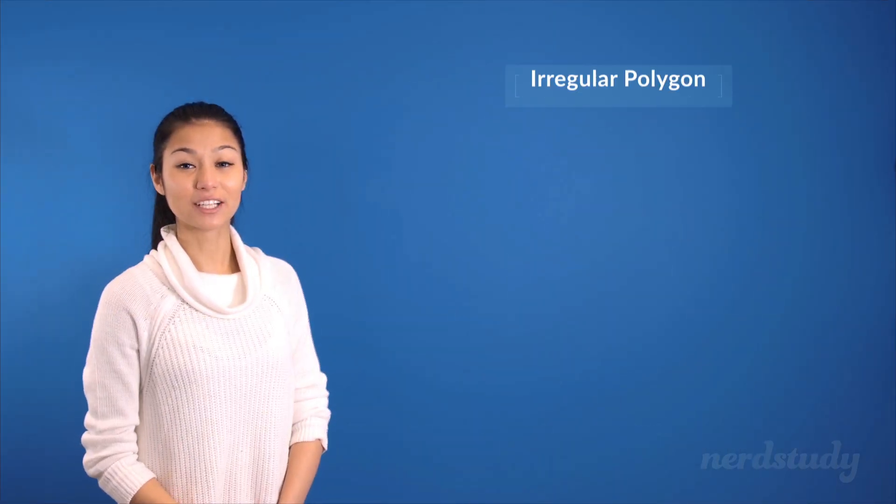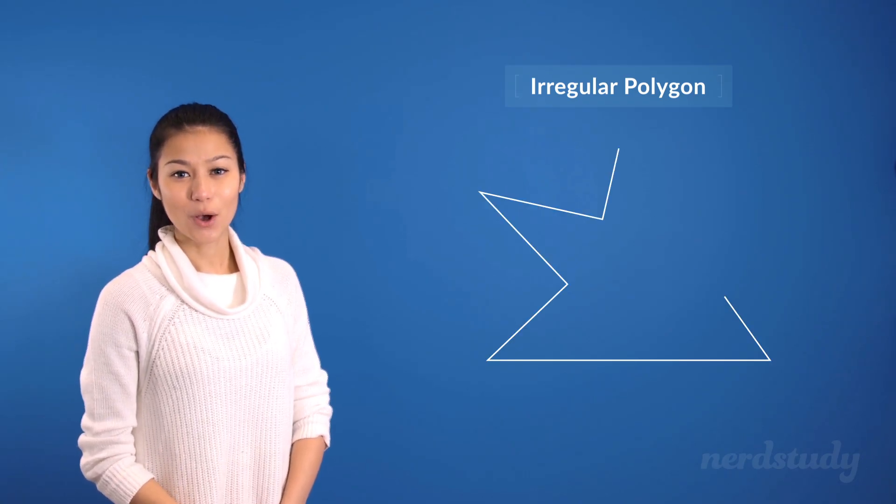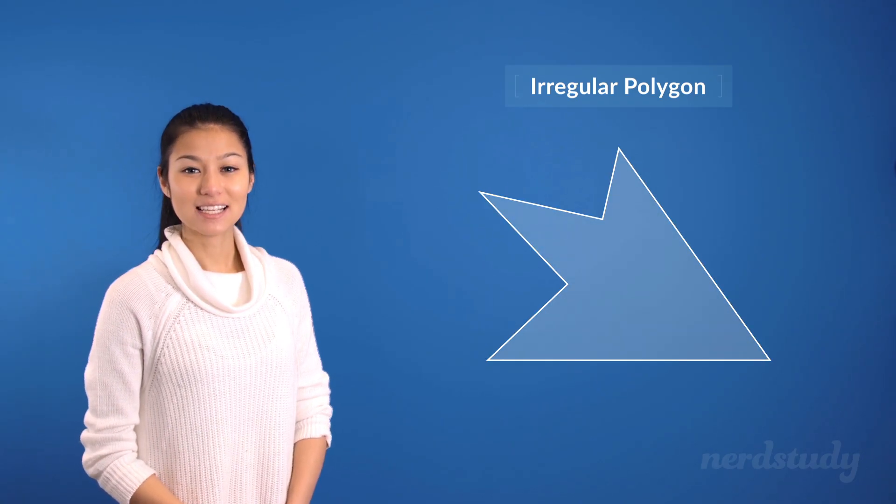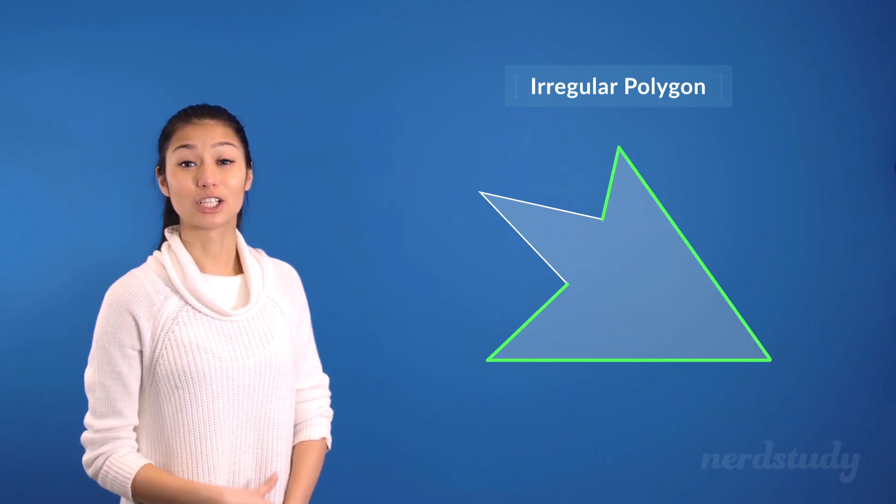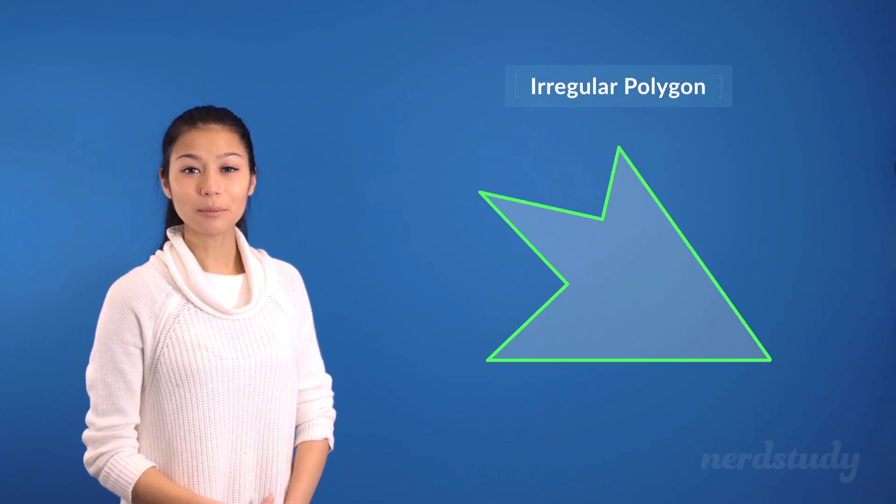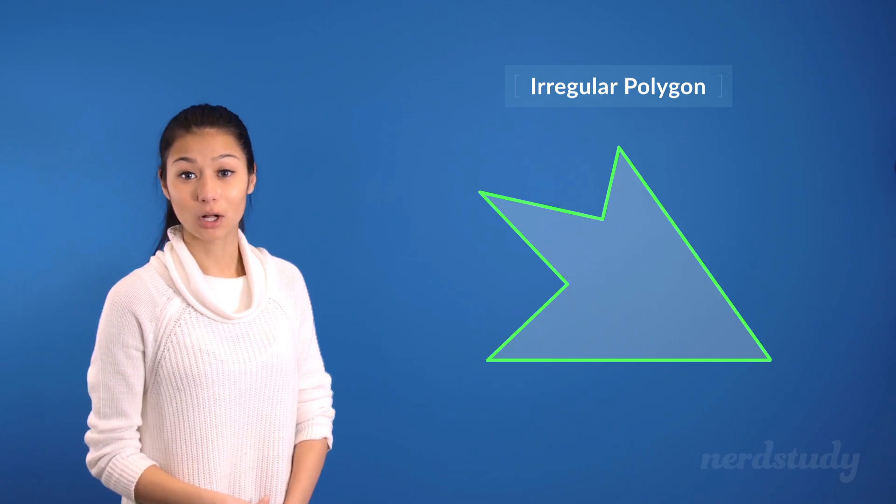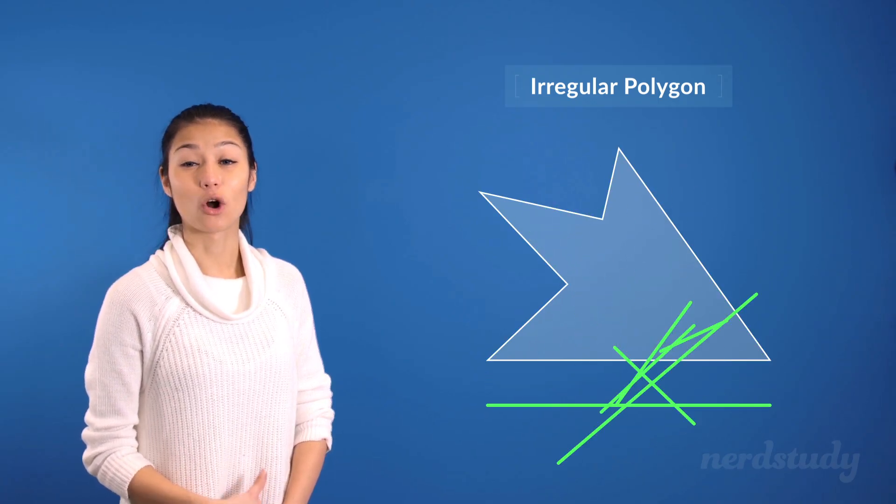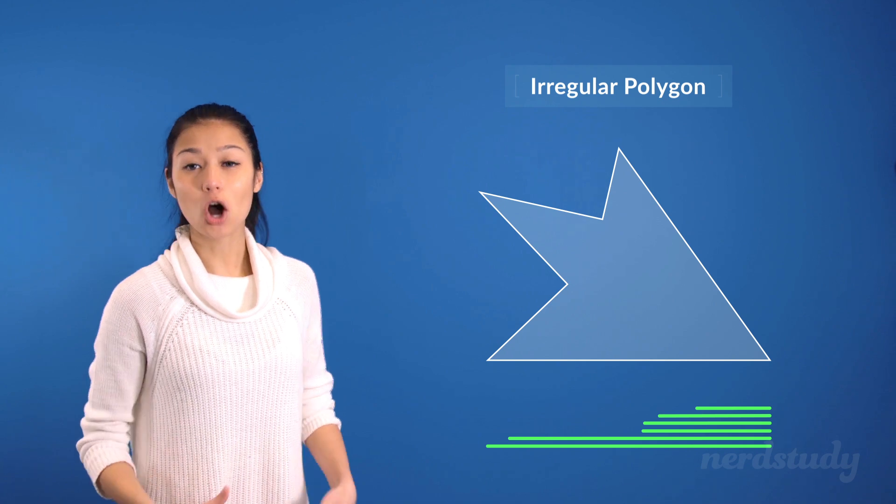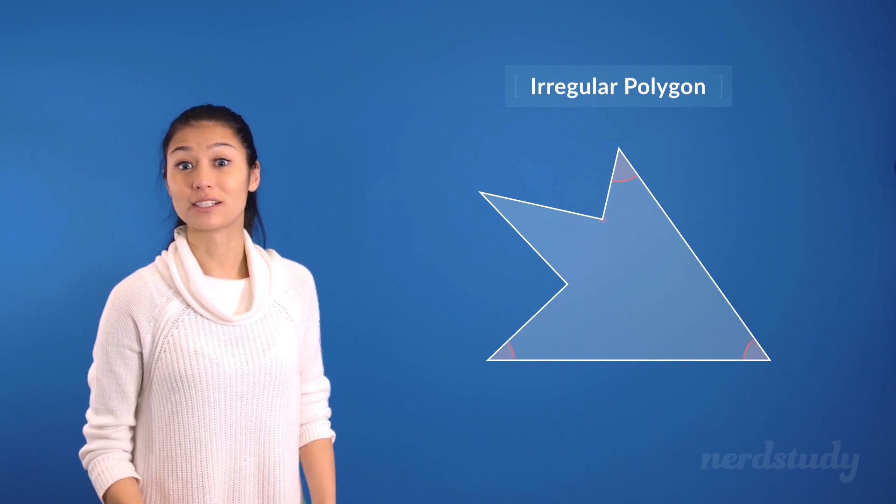As for an irregular polygon, if we take a look at this funny-looking shape here, we would still call it a polygon, since it is made up of line segments and it's a closed object. But we wouldn't be able to call it a regular polygon, since the line lengths aren't all the same, and obviously not all the angles are the same as well.